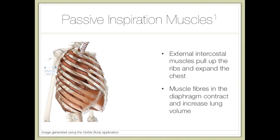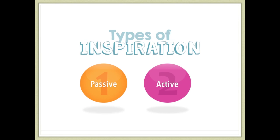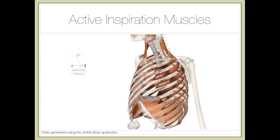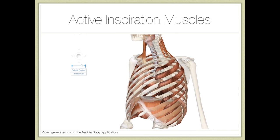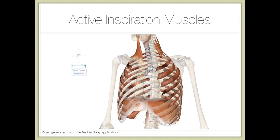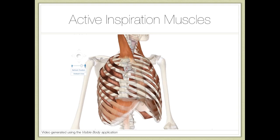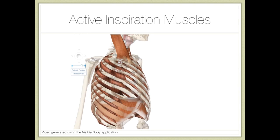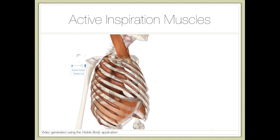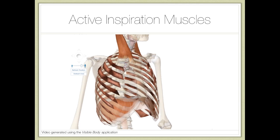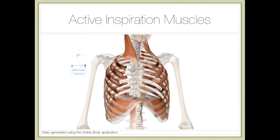Now we will be talking about the muscles of active inspiration. On this side we can see all of the muscles involved. You may recognize the external intercostal muscles and the diaphragm mentioned during passive inspiration. You may also notice a new group of muscles around the neck — we call these the accessory muscles.